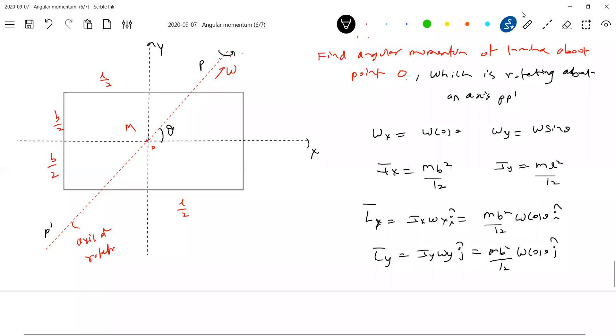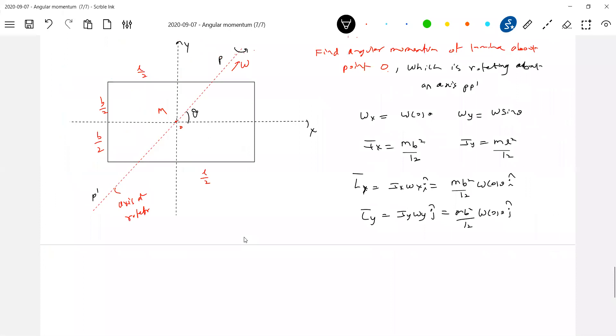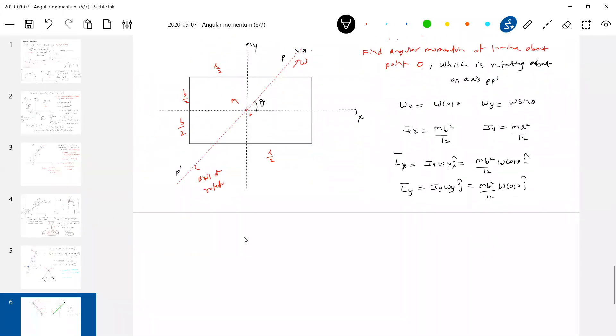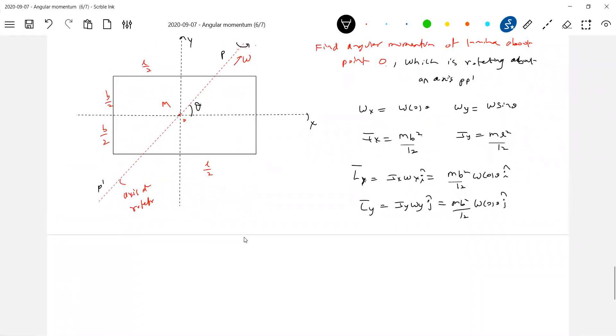Then, what is the resultant angular momentum? The resultant angular momentum is given by L x-bar plus L y-bar. What is L bar is equal to L x-bar plus L y-bar. This will be equal to M B square by 12, omega cos theta, i cap. M L square by 12, omega sine theta, j cap. M omega by 12, you can take outside. B square cos theta i cap, L square sine theta j.